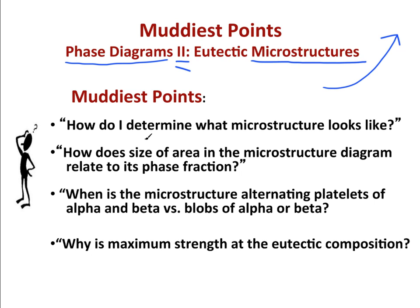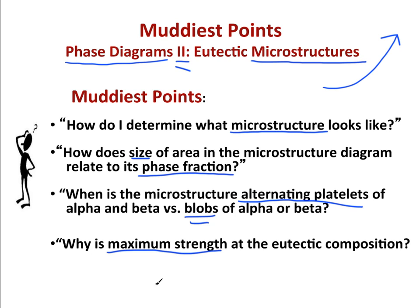In this screencast, we will answer the following questions: How do I determine what microstructures look like? How does the size of area in the microstructure diagram relate to its phase fraction? When is the microstructure alternating platelets of alpha and beta versus blobs of alpha or beta? And why is the maximum strength at the eutectic composition? There are a bunch of hyperlinks provided for specific topics. Let's get started.